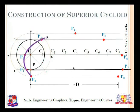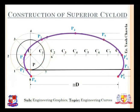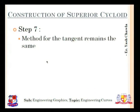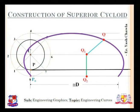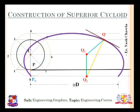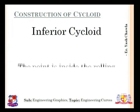Moving on to the next point: we have to join all the points to get our required superior cycloid, as we did in the previous problem. The curve shown in purple is the required cycloid. For the tangent, we'll take a point Q, mark point Q1, then mark Q2 — same as the previous problem. This is the perpendicular to the curve, and this is the tangent. I hope you all know how to draw a perpendicular to a line, so we are not discussing that method right now.